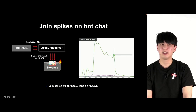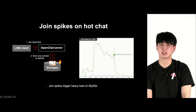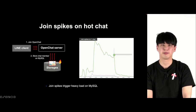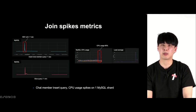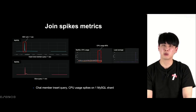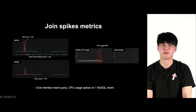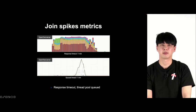In the open chat server, when there is a join request, the chat member data is stored in MySQL. When join requests crowd into one chat, there is an increase in MySQL load. In one second, if there are 2,000 join requests, in one MySQL shard, the insert query becomes crowded and there is a huge spike in slow queries and CPU usage.